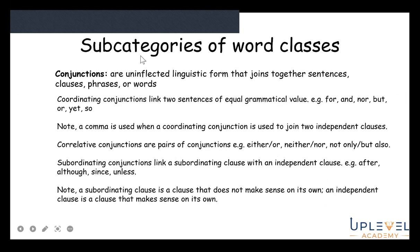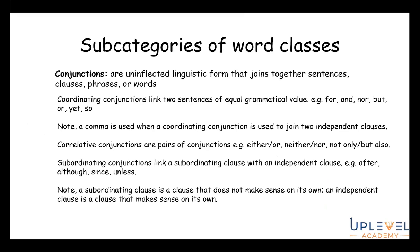Conjunctions are words that join together sentences, clauses, phrases, or words — essentially joining words. Coordinating conjunctions link two sentences of equal grammatical value: for, and, nor, but, or, yet, and so. A comma is used when a coordinating conjunction joins two independent clauses.